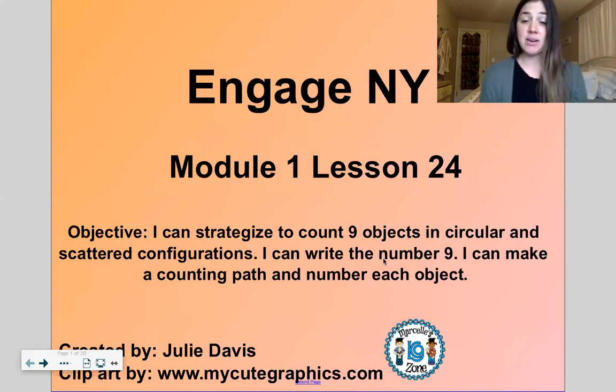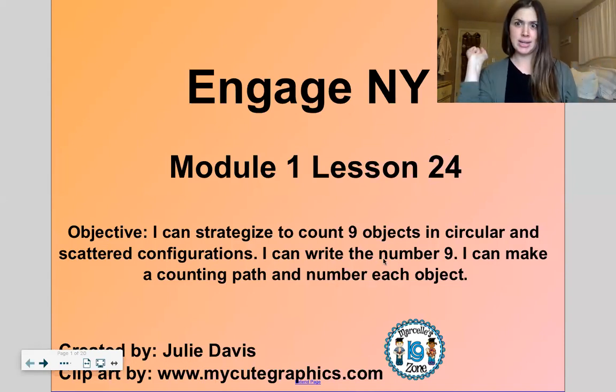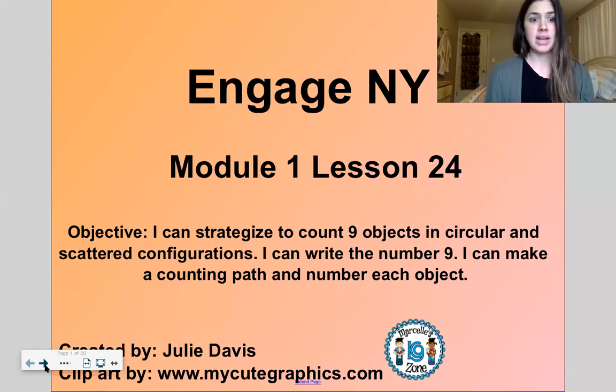So it should be short and sweet, but still some good math work. All right, so our goal will be to count nine objects in a circular and in a scattered configuration and we will write the number nine. So we'll work on drawing that counting path. I liked drawing a counting path last time.